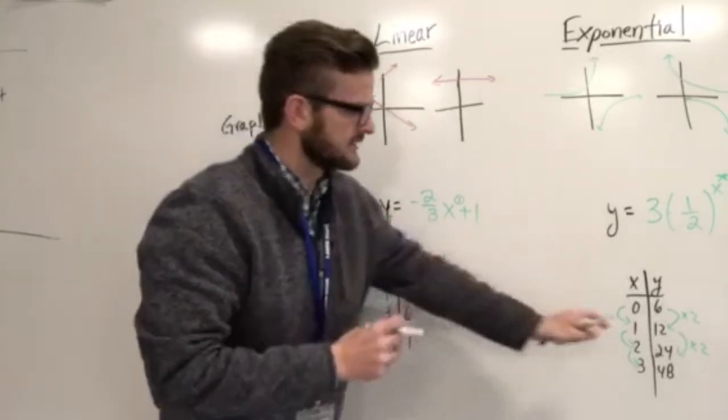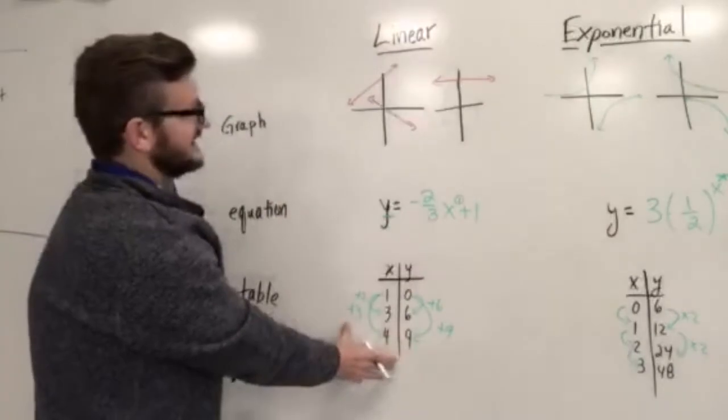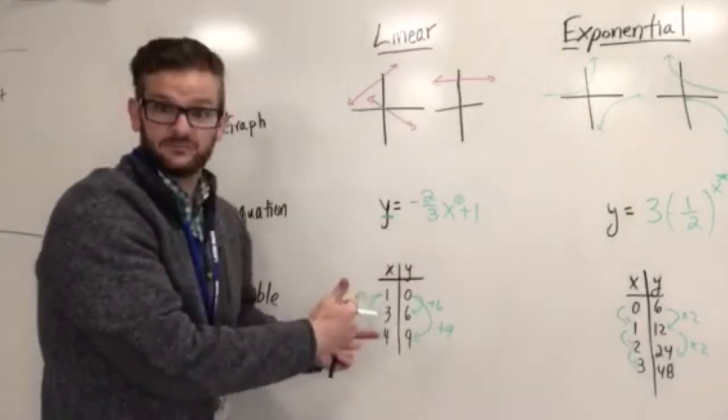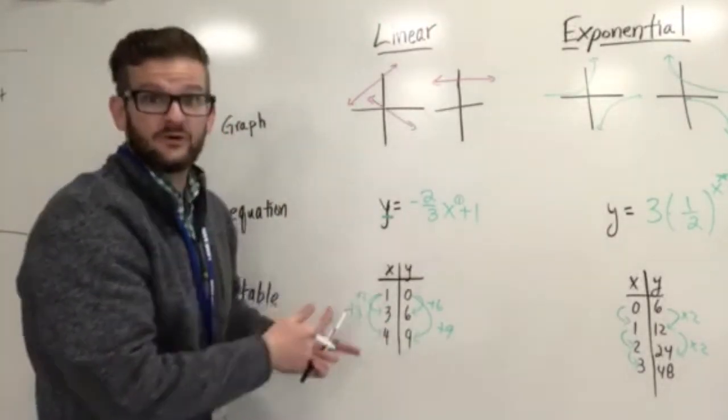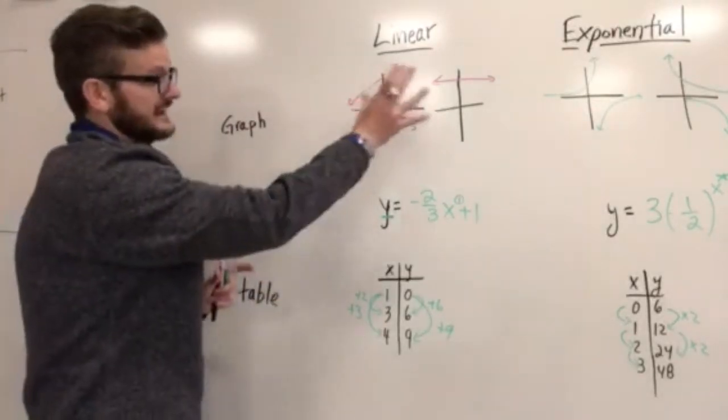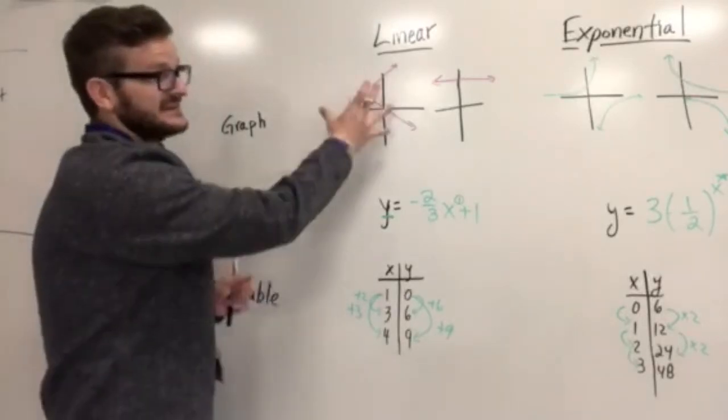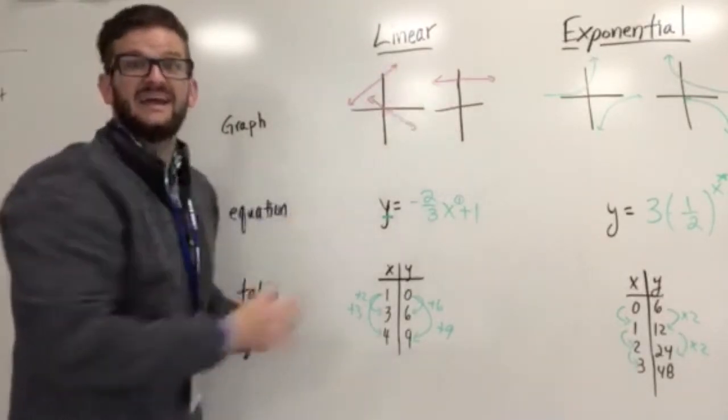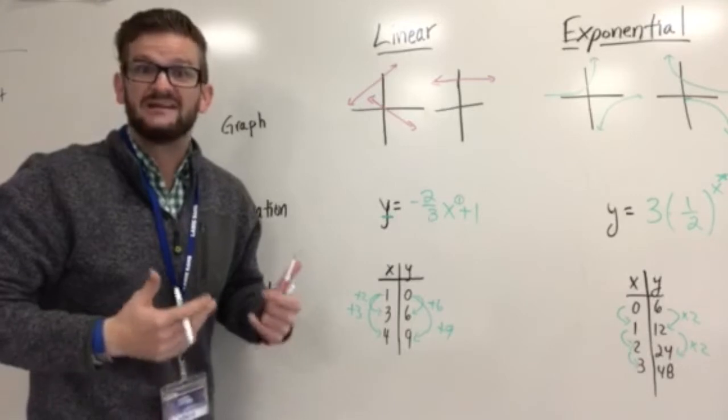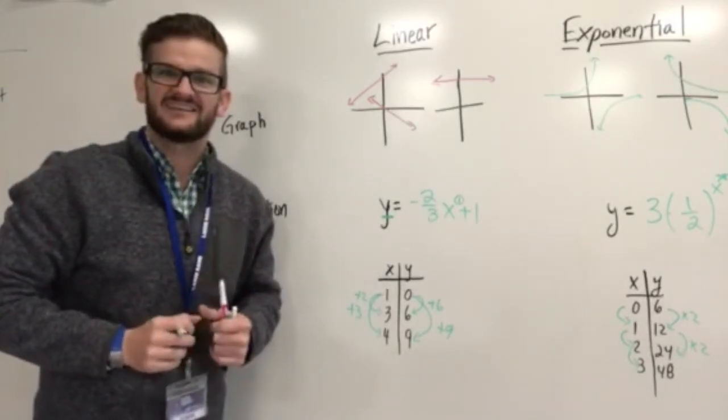So kind of a quick recap. The exponential will have multiplication as a pattern. The linear will have more of an addition subtraction pattern, but really focusing on the constant rate of change. So based on this, if we're looking at a graph, an equation, or a table, we should be able to determine is it linear or is it exponential? And if it doesn't fall in either category, it's neither. Thanks for watching. Hope you tune in next time for the next video.